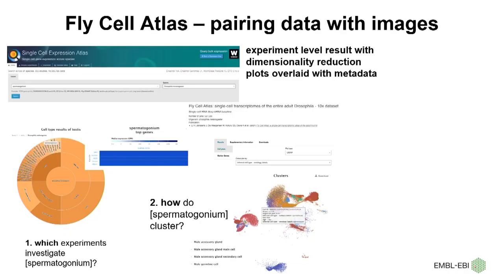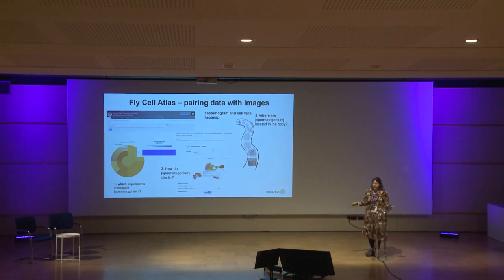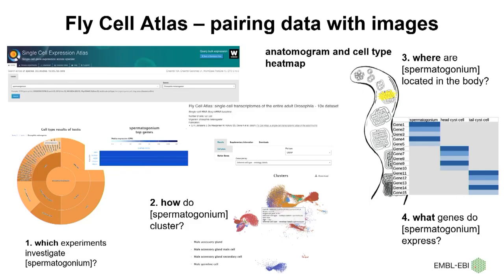You get your experiment level result with dimensionality reduction plots overlaid with inferred cell type metadata or other sample level metadata, so you can see how your cell type clusters with other cell types, along with the corresponding gene expression heat map. And then you have your anatomogram, which helps you answer where your cell type is located in the body, and the heat map which shows what genes are expressed in your cell type alongside all other cell types within that organism part.